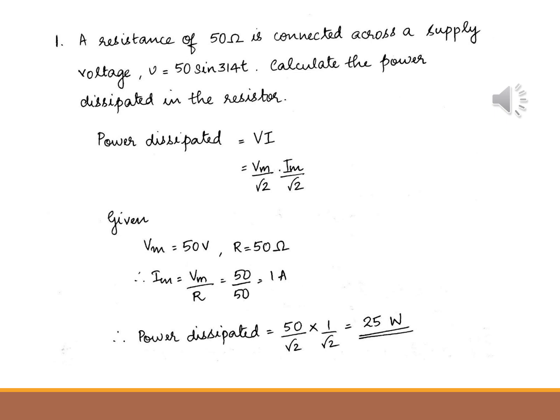In the first question, a resistance of 50 ohms is connected across the supply voltage given by V equal to 50 sin 314T. Calculate the power dissipated in the resistor. In this question, Vm is given to be 50 volts, as the equation for voltage is V equal to Vm sin omega T, and the resistance is given to be 50 ohms. So Im is equal to Vm divided by R, which gives 1 ampere.